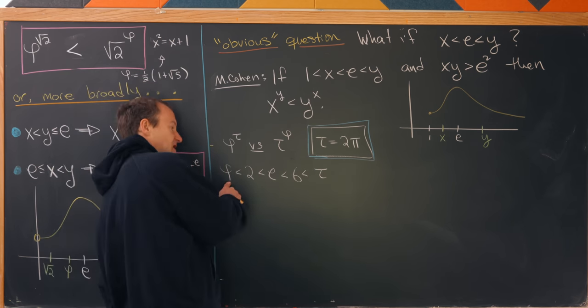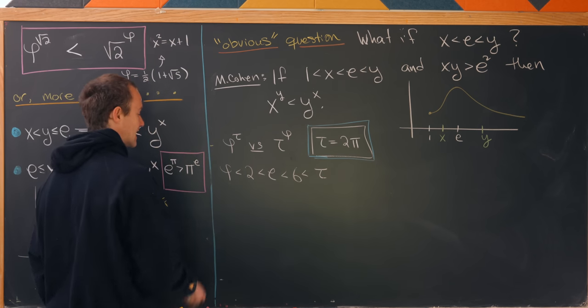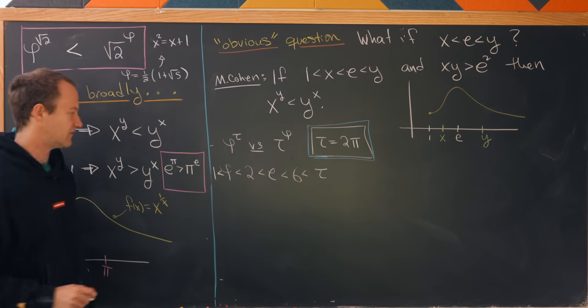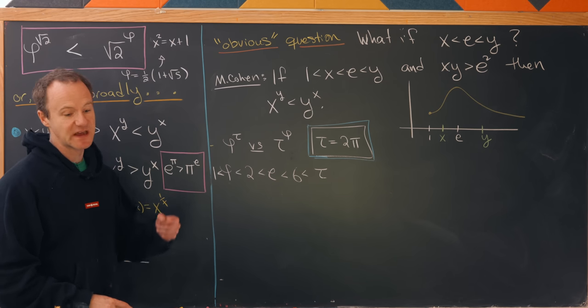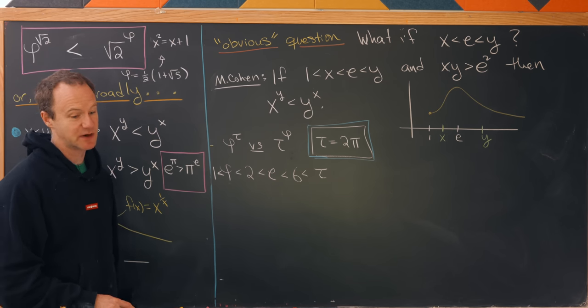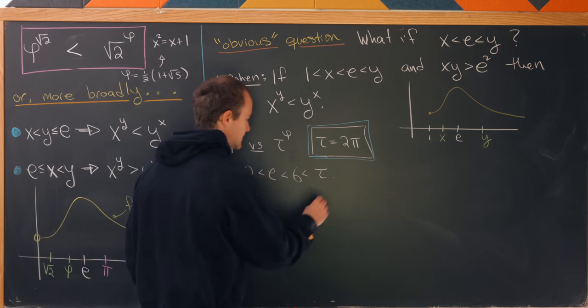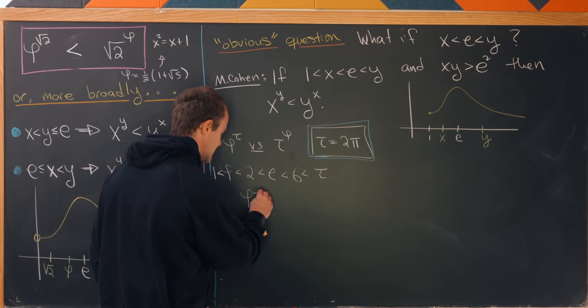I guess maybe I should also write here that phi is bigger than 1. And now we just have to look at phi times tau and make sure that's bigger than e squared. So, let's check that. So, phi times tau.